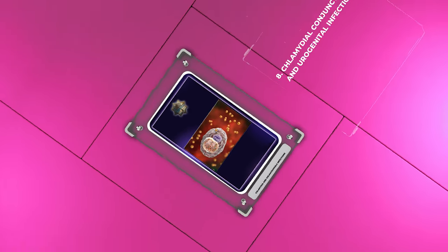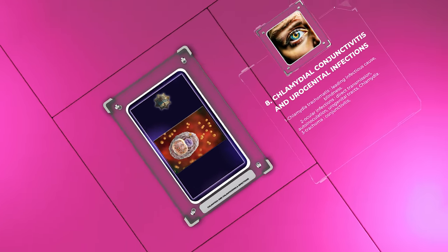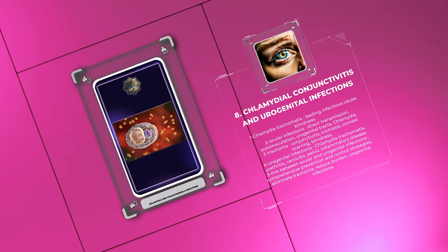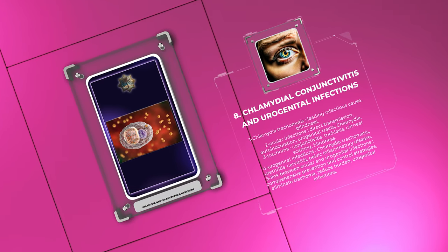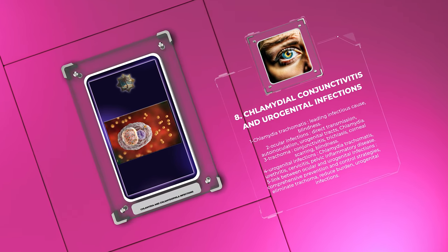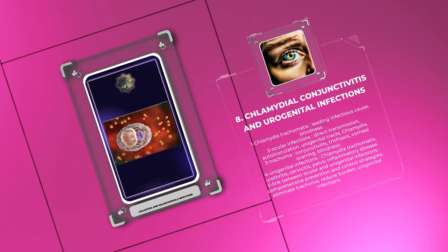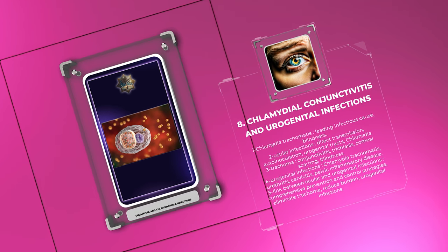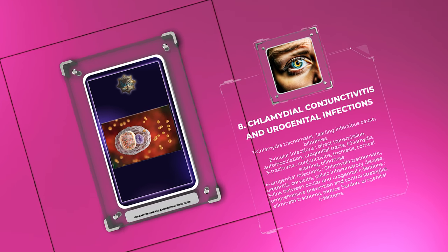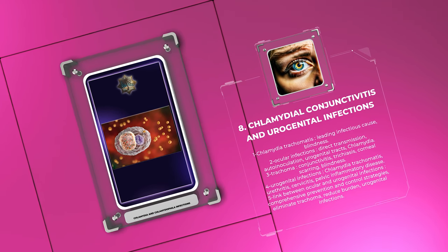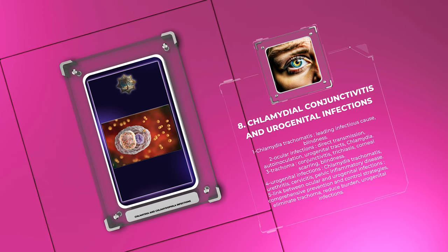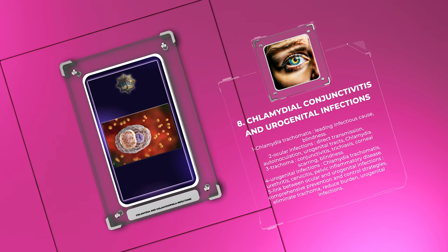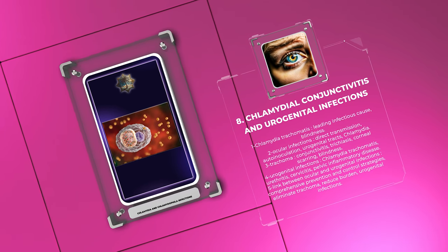Chlamydia trachomatis, the causative agent of trachoma, is the leading infectious cause of blindness worldwide. Ocular infections occur through direct transmission or autoinoculation from urogenital tracts harboring chlamydia. Trachoma manifests as conjunctivitis and progresses to trichiasis, corneal scarring, and blindness if left untreated.